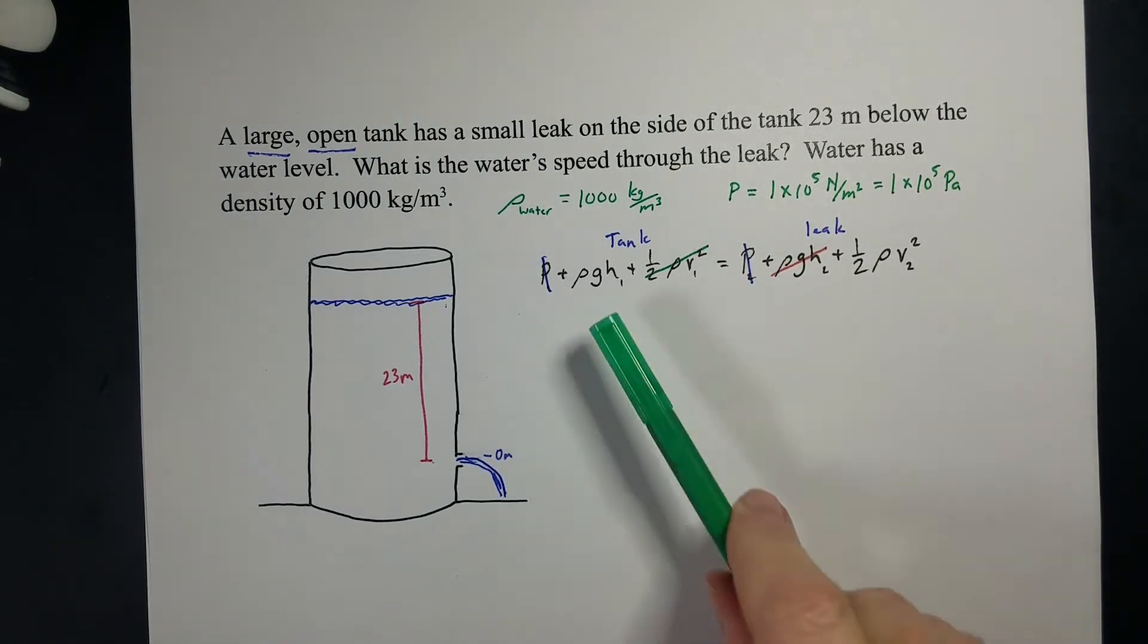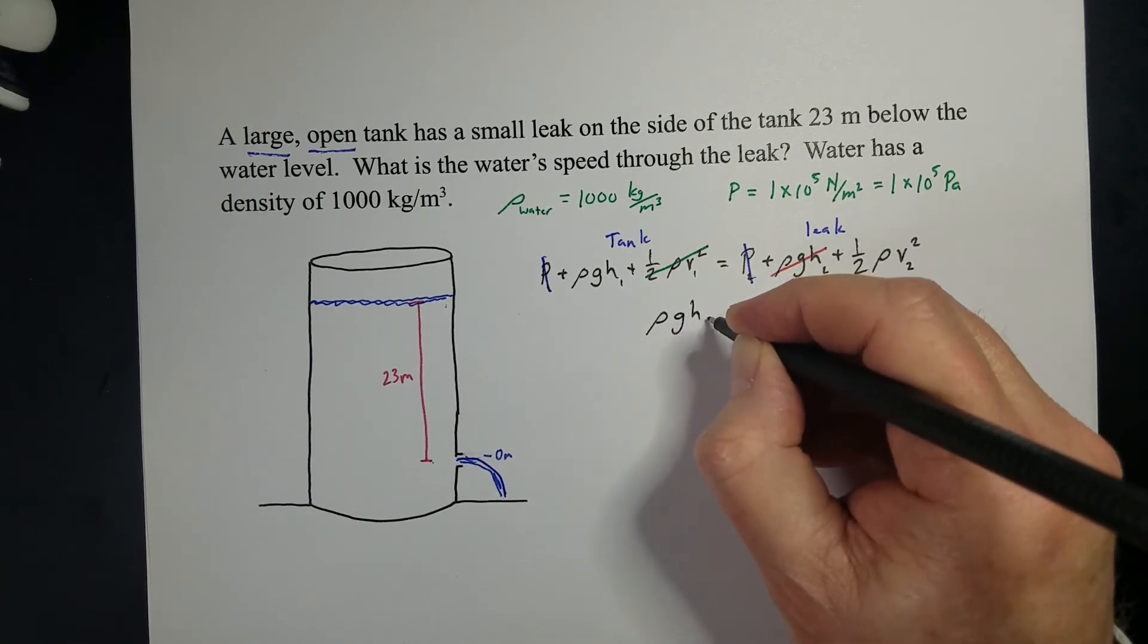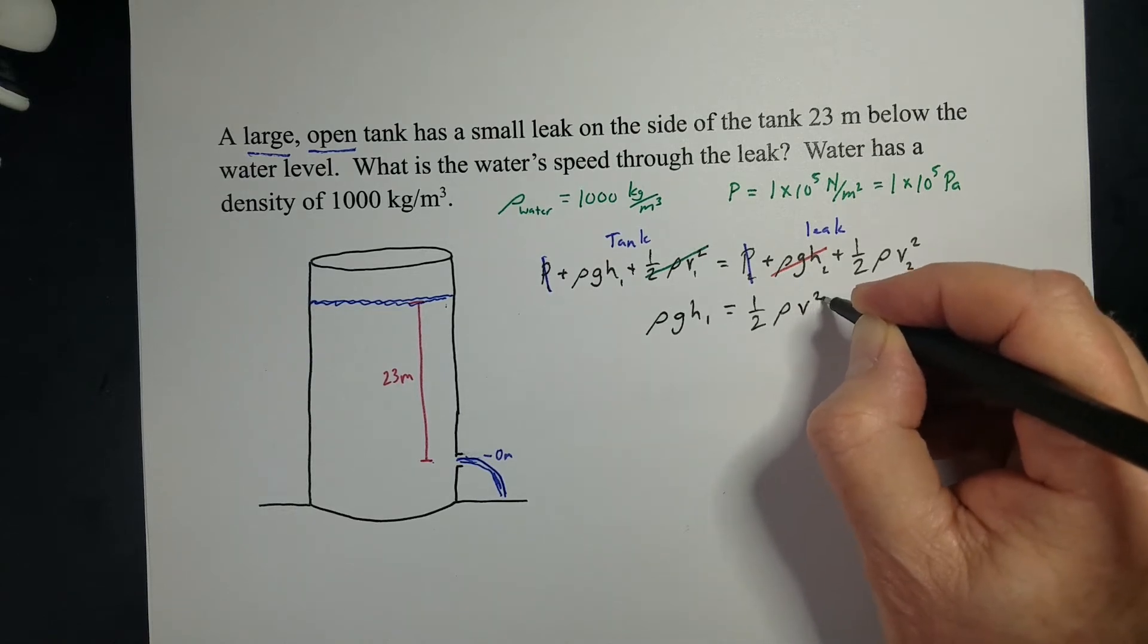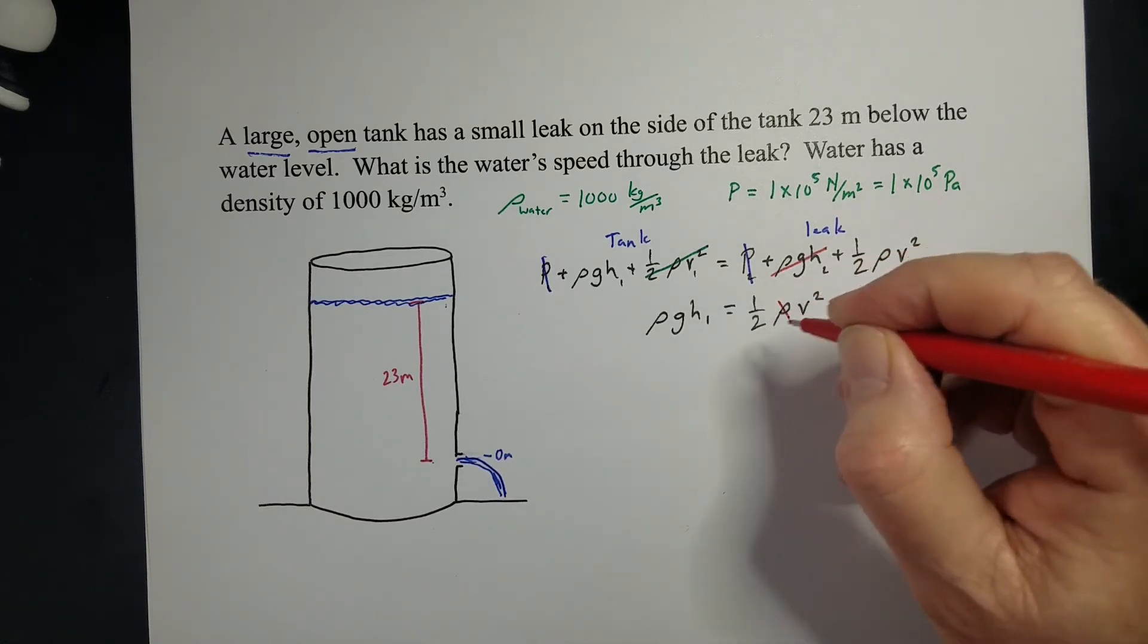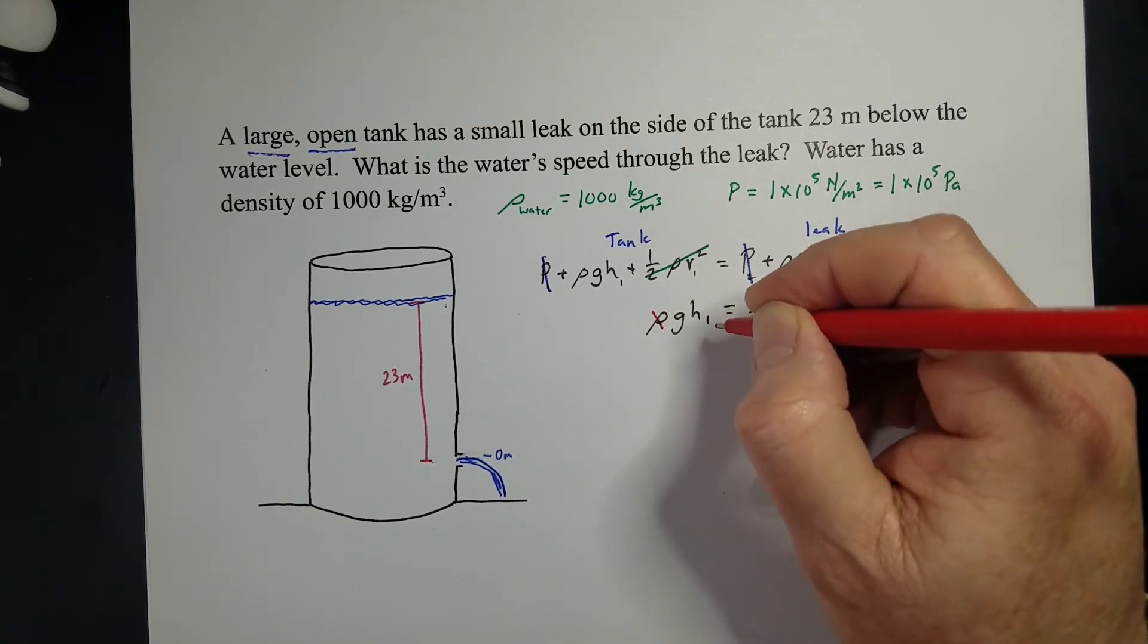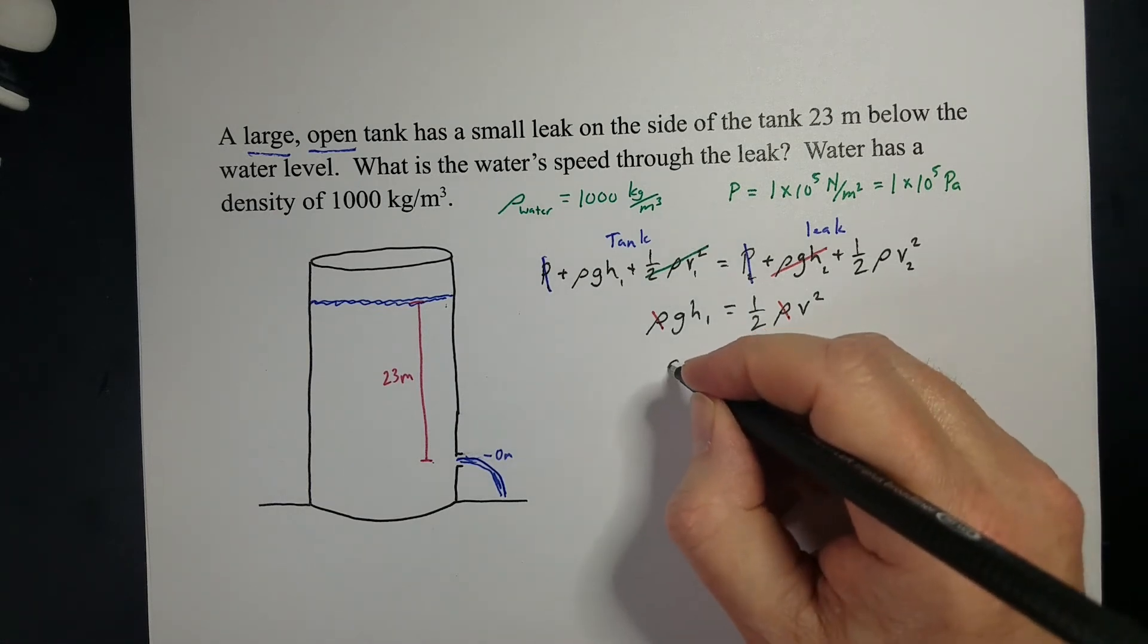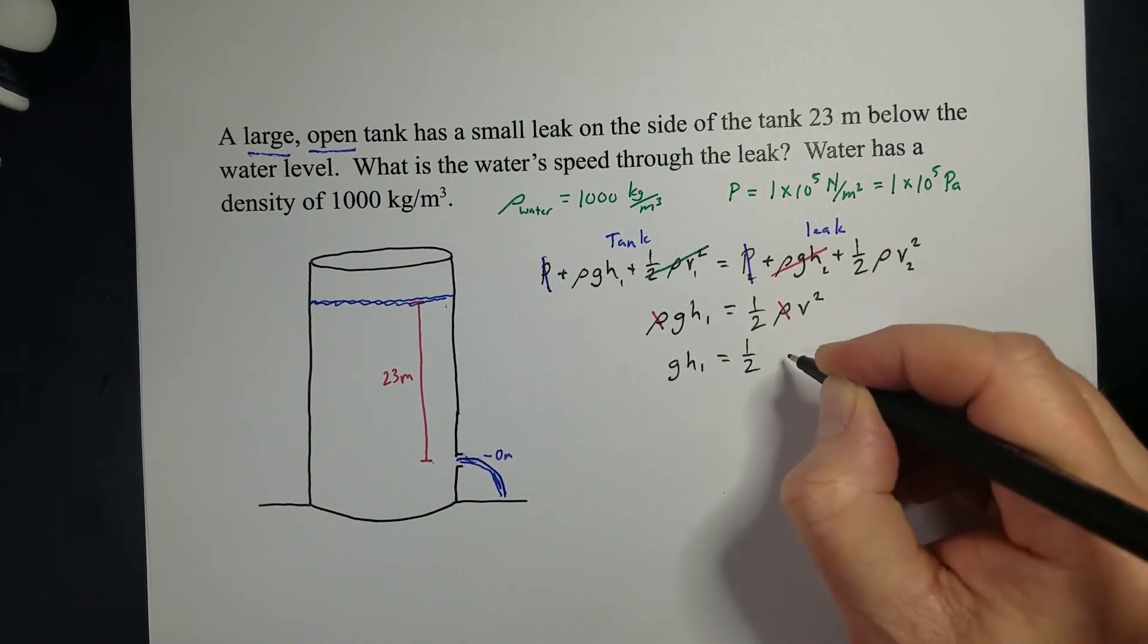Now we got down to this, and I'm going to rewrite it. Rho GH1 equals 1 half rho V squared. And here's another thing that happens. We've got rho in each term. So that rho and that rho cancel each other out. And of all that big mess of an equation, we end up with this.